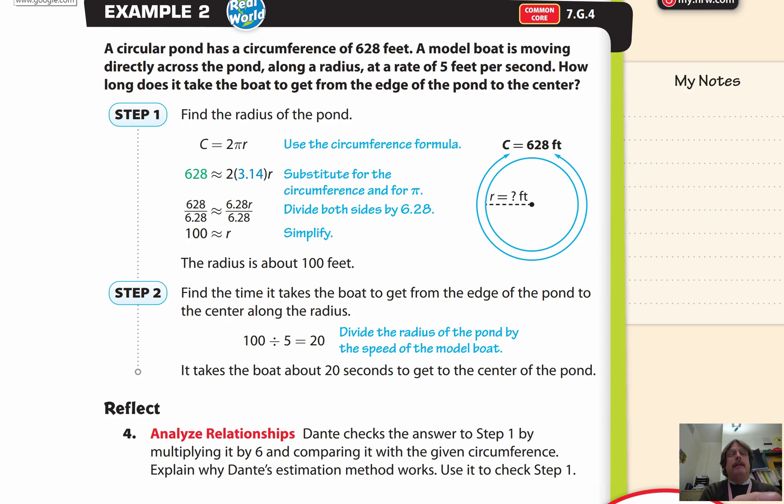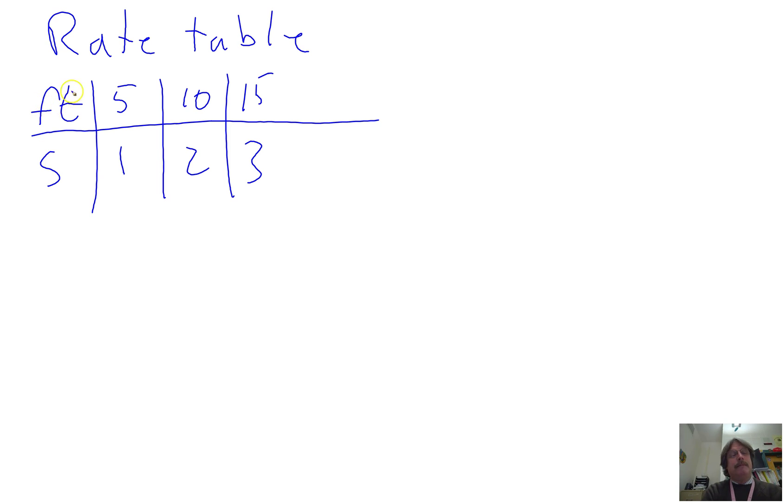Here in the next example, they give us the information. A circular pond has a circumference of 628 feet. A model boat is moving directly across the pond along the radius at 5 feet per second. So it's saying every second it'll go 5 feet. So if you consider a rate table, and I've set it up as feet per second. So I will go 5 feet in 1 second, 10 feet in 2 seconds, 15 feet in 3 seconds, and so forth.